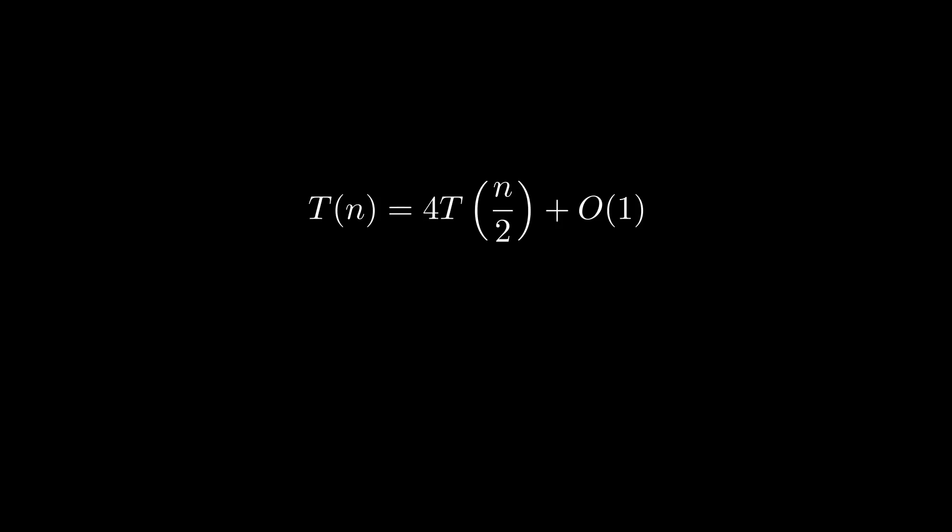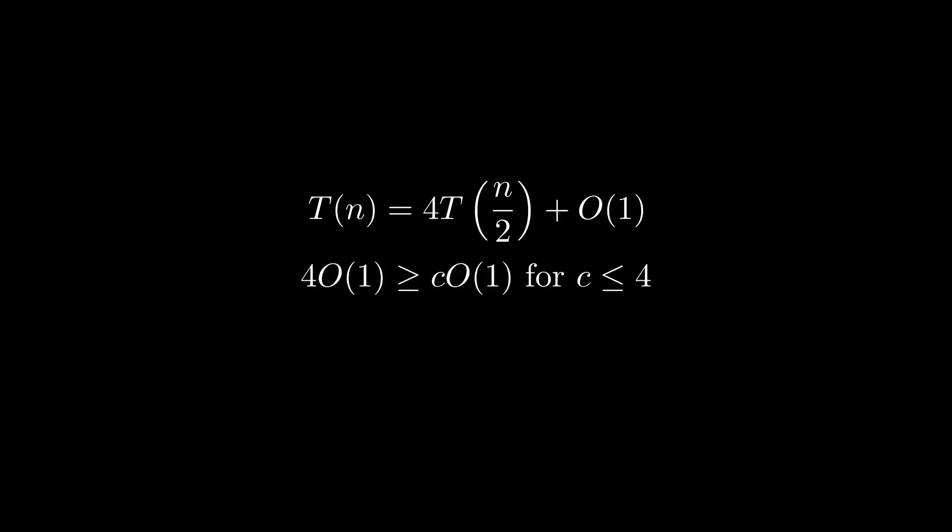Suppose we have the following recurrence relation: T(n) = 4·T(n/2) + O(1). This is a relation that could occur, for example, by taking an n×n table and recursively dividing it into 4 subproblems of size n/2 × n/2. Here we have A = 4, B = 2, and F(n) is a constant function. Since F(n) is constant, 4·O(1) ≥ C·O(1) for C ≤ 4, meaning the first case is satisfied. Hence, the complexity is Θ(n^(log_2 4)), which is simply Θ(n²).